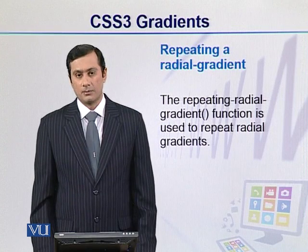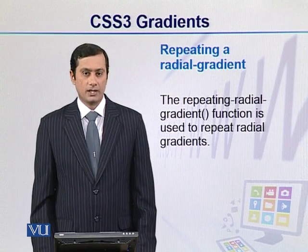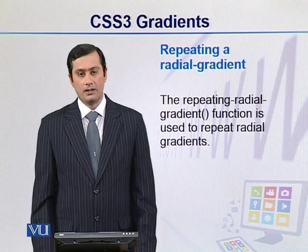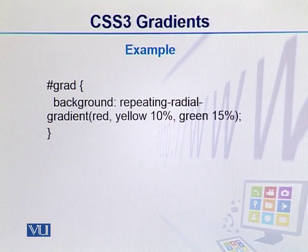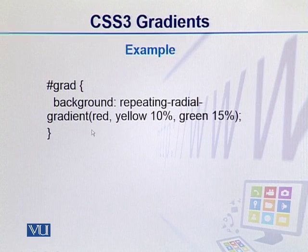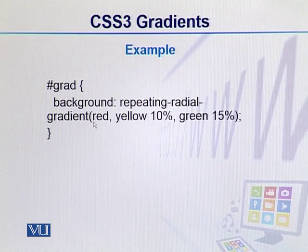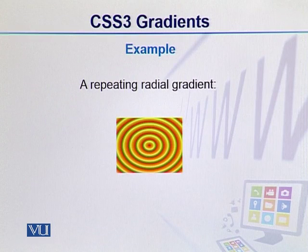We can repeat the radial gradient using the property repeating-radial-gradient. If we look at this example, we simply have to use repeating-radial-gradient rather than radial-gradient only. After that, we can see the values of the color stops, and we can also add shape or size values. So we have seen that in CSS3 we can create linear gradient and radial gradient on the fly using simple CSS properties.